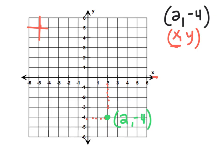Why don't you try to graph negative three comma five? Push pause, try it, push play when you're ready. Start at the origin. The first number says negative three, so go left to negative three. The second number is five, so go up one, two, three, four, five. That's where my point is — negative three over and up five. I'll label that point negative three comma five.